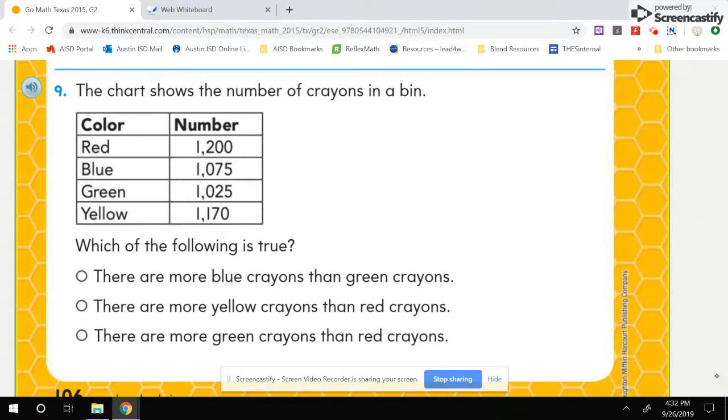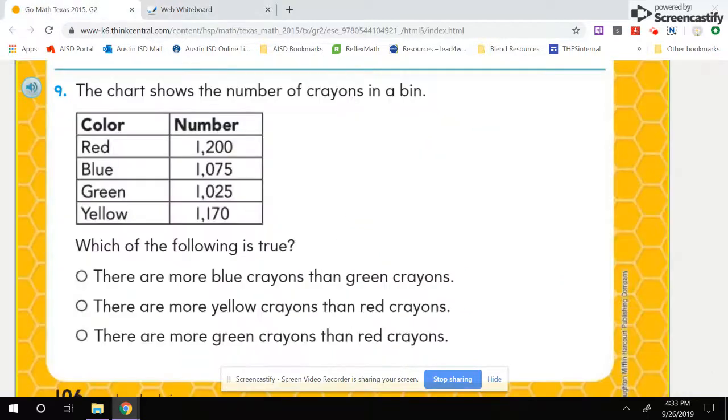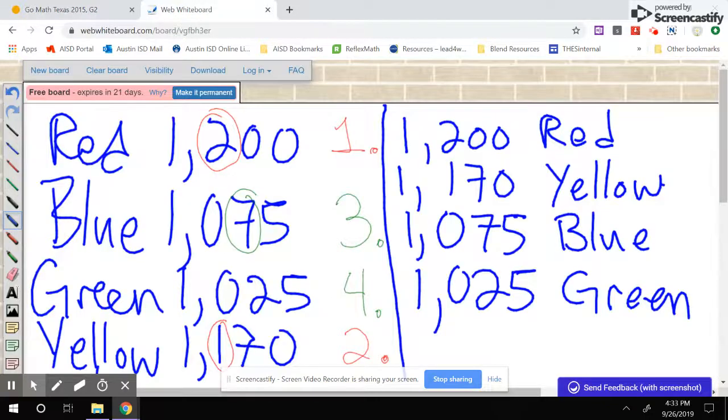There are more yellow crayons than red crayons. Yellow is less than red, so we know that is not a possible answer choice. There are more green crayons than red crayons. When we look, red is the most, so we know that cannot be true.